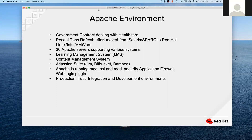One of the things I wanted to do during that refresh was use automation to manage our Apache environment. We have several applications: a learning management system, a content management system, and the Atlassian suite — Jira, Bitbucket, and Bamboo. Our Apache runs mod_ssl and mod_security as an application firewall, and a couple run a WebLogic plugin. We have production, test, integration, and development environments — between all of those we have about 30 Apache servers to manage.